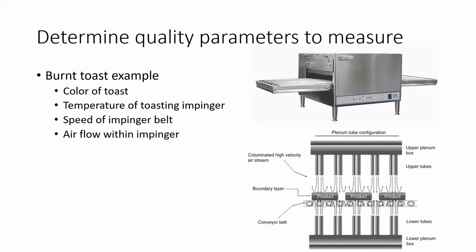If we really think about this system, there are a whole bunch of things that we could and should be measuring to know if our toast is burnt or not. The number one thing we need to measure is the color of that toast coming off. We may have a color specification that allows us to know if the toast is within specification, too burnt, or undercooked — so we need to measure the color of that toast.